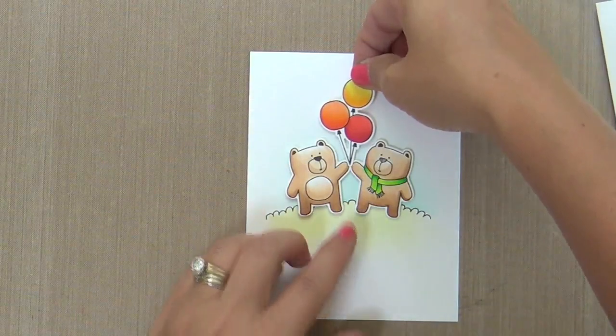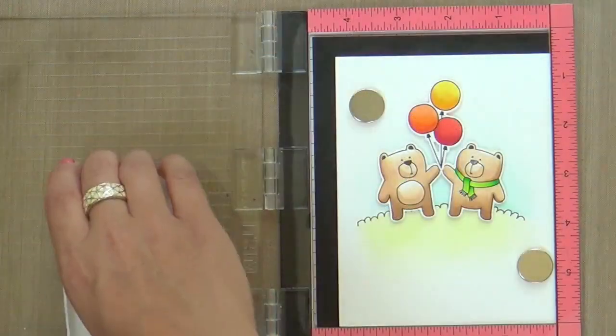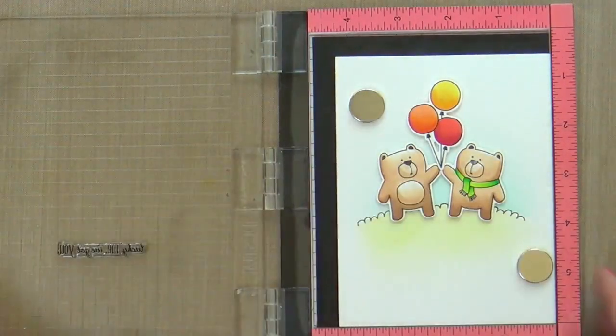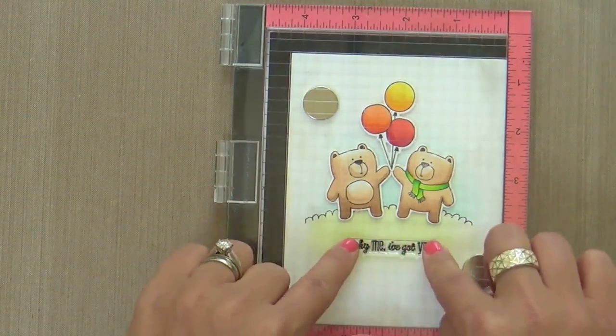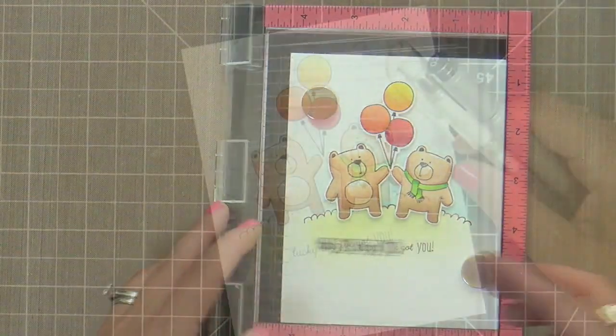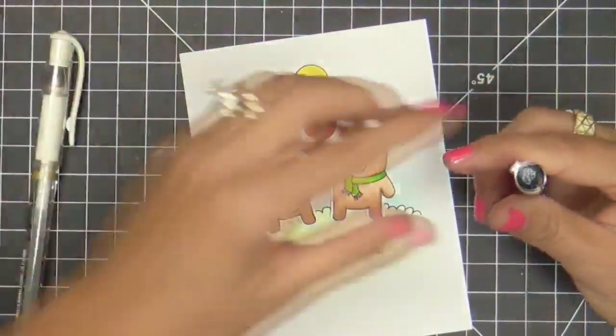So now I'm just popping up my images with a little foam tape and then I'll stamp a sentiment. The sentiment comes from the Friends for All Seasons Summer, which is just fabulous. All of these Friends for All Seasons are must-haves. They're just completely adorable.